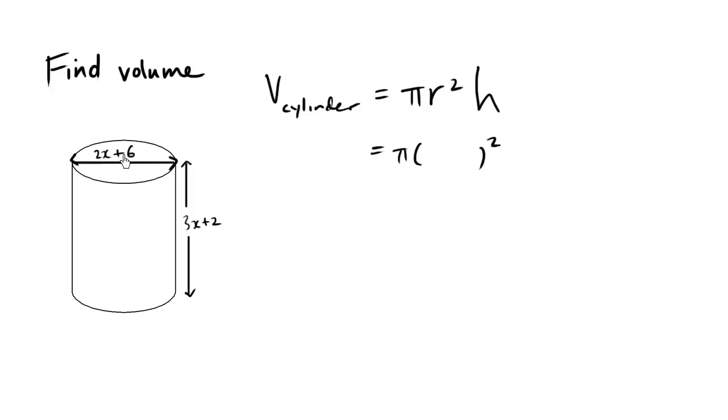Pi, the radius is half of that, x plus 3, times h. Now h here, the height, is given as 3x plus 2.